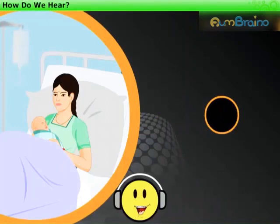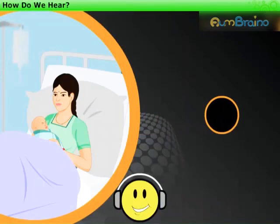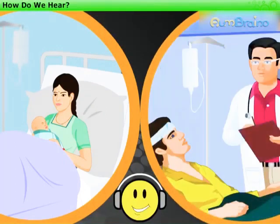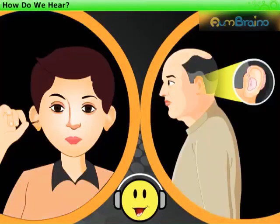Total hearing impairment, which is rare, is usually from birth itself. Whereas partial disability is generally because of disease, injury, or age.